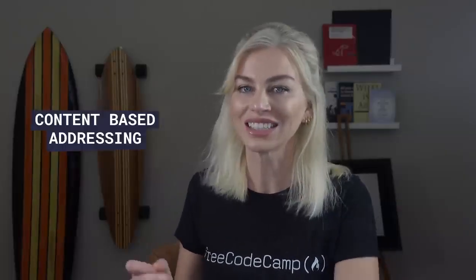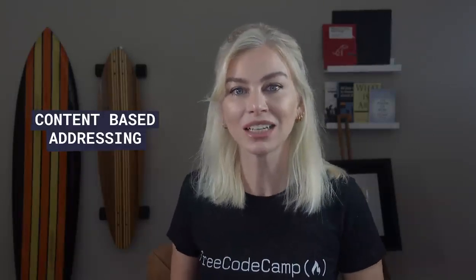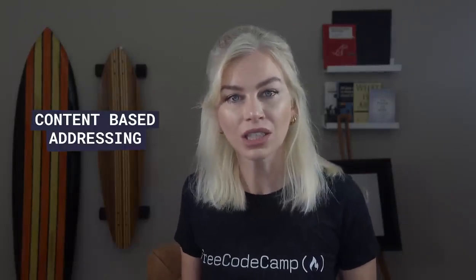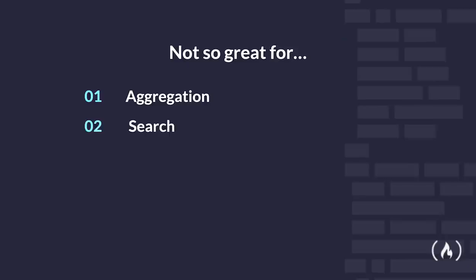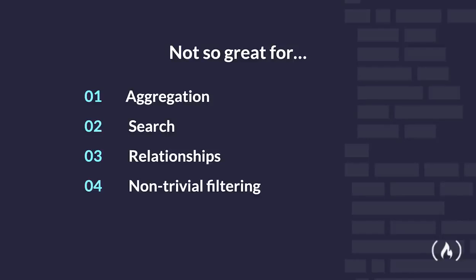Web3 overcomes this issue with content-based addressing. This means that with Web3, when requesting a specific resource, you do not request a location — you request what you are looking for instead, and it is most likely spread all over Web3, not just in one location. So super safe, but hard to query. While you are able to find a specific thing you are looking for, more advanced real-world queries and operations like aggregation, search relationships, and non-trivial filtering are just not possible.